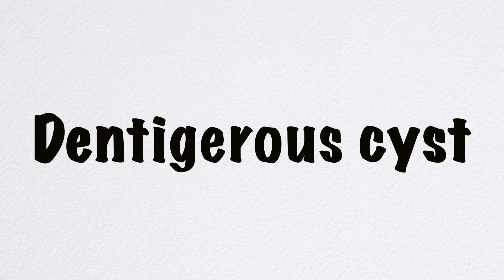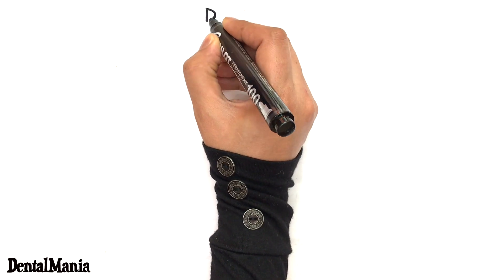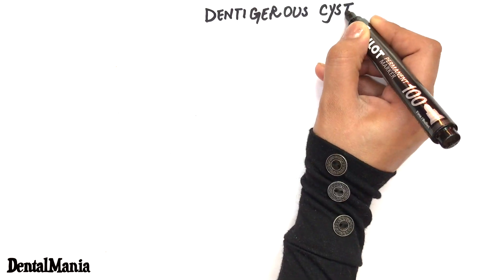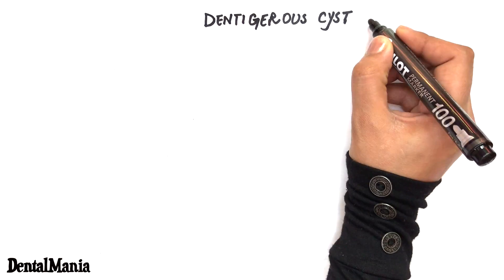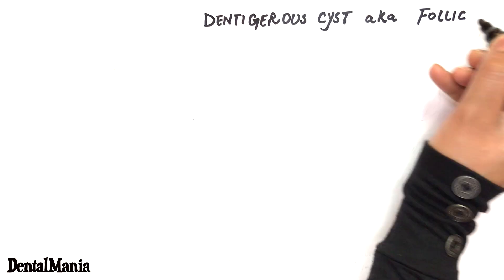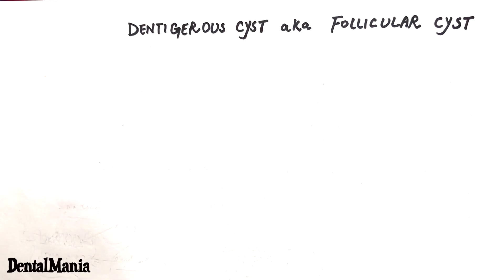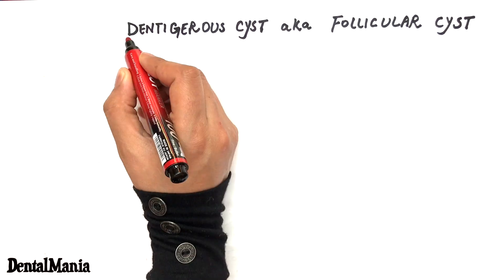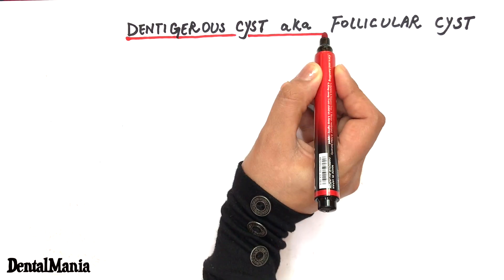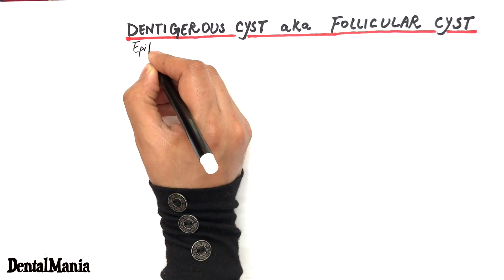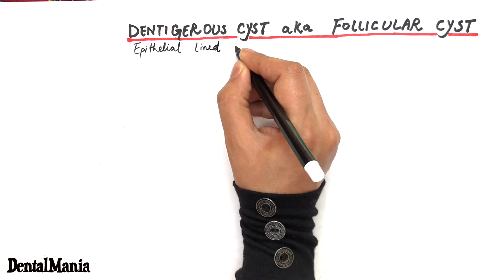Today's video is about dentigerous cyst. Dentigerous cyst, also known as follicular cyst, is the most common epithelial-lined developmental odontogenic cyst, making up about 20% of all epithelial-lined cysts of the jaws.